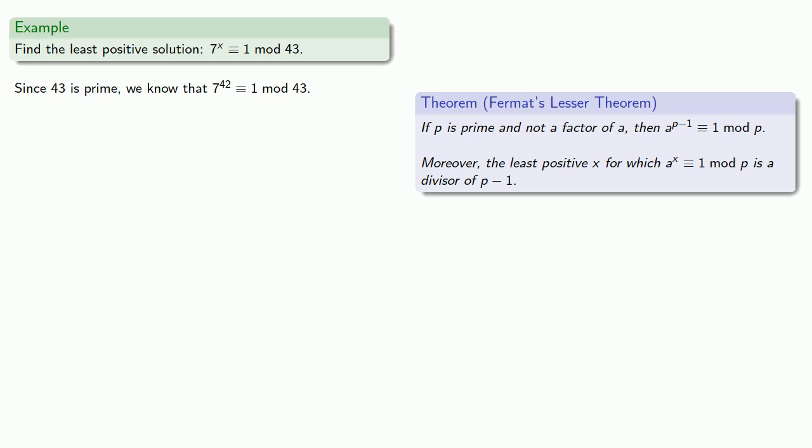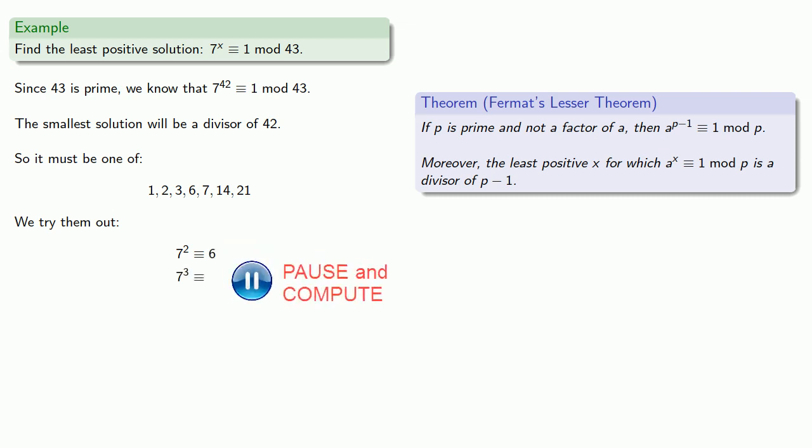I would verify that this is true for two reasons. One, don't believe everything you see on the internet, but the other is that this is good practice using the fast-powering algorithm. Fermat's theorem also claims that if there is a smaller solution, it will be a divisor of 42. It can't be 1 because 7 to power 1 is just 7, but we'll try 7 to the 2nd, 7 to the 3rd, and 7 to the 6th. So we know the least positive solution is x equal to 6.